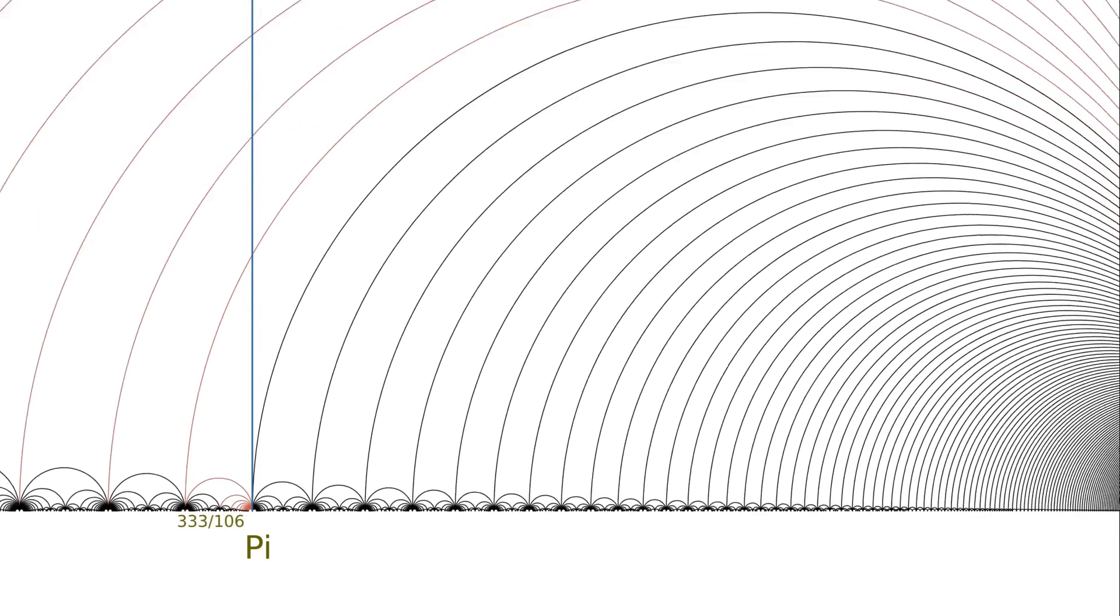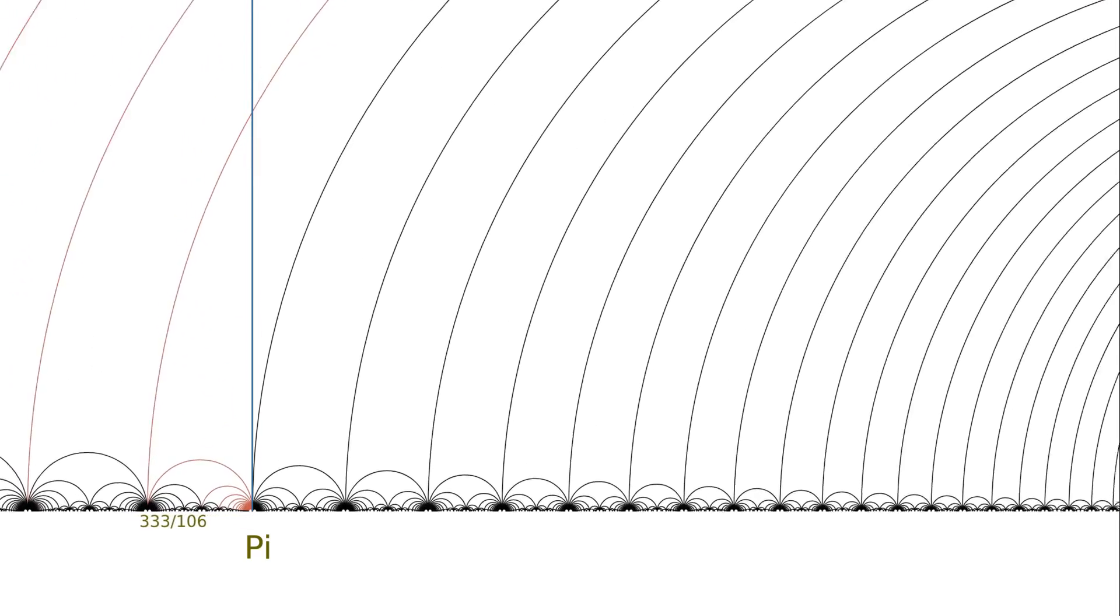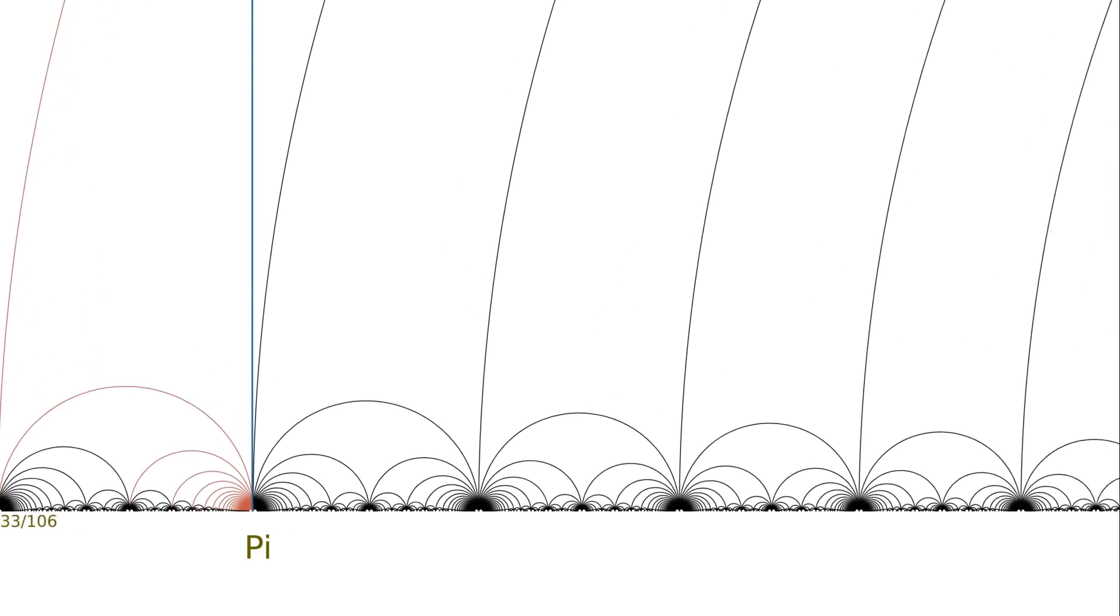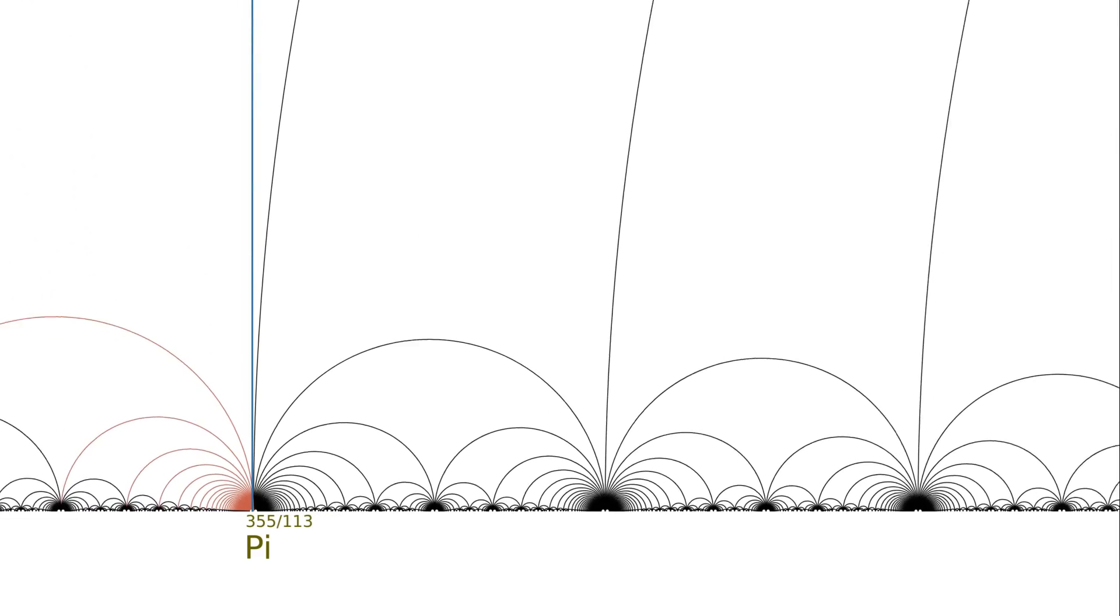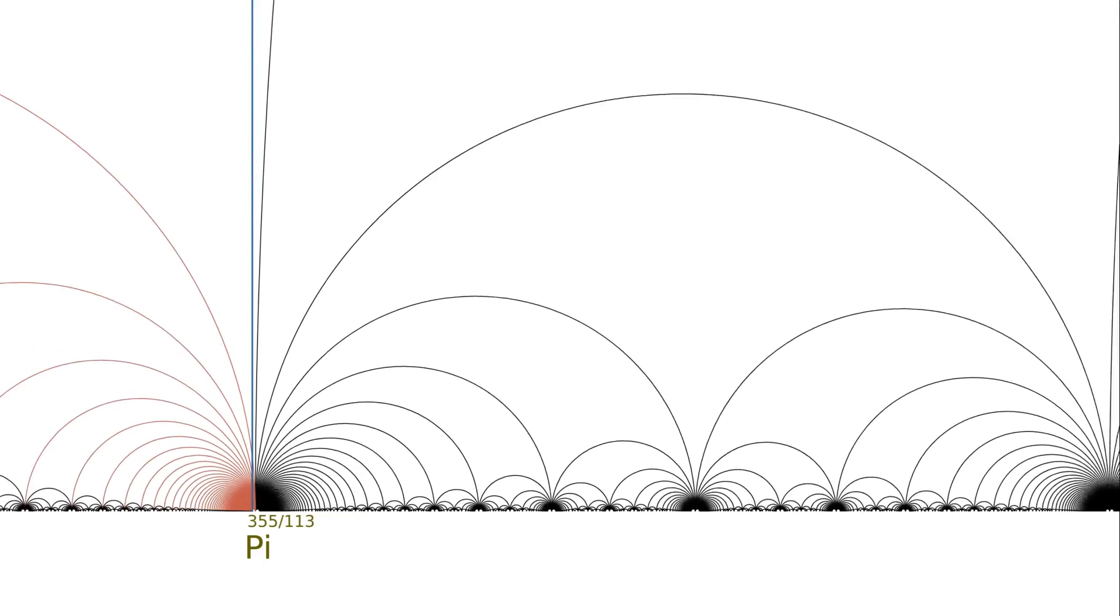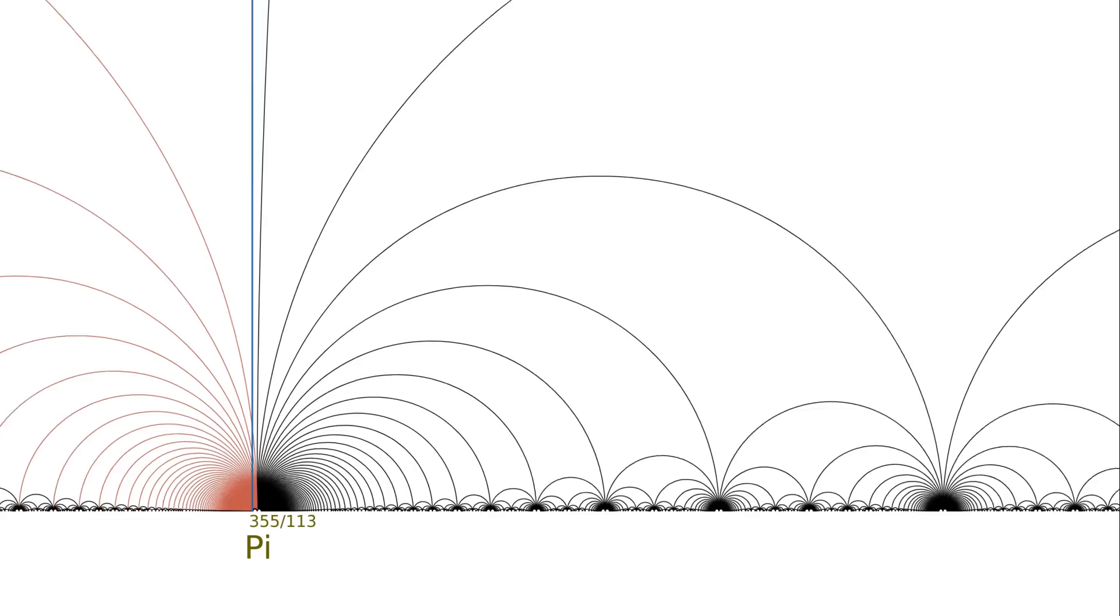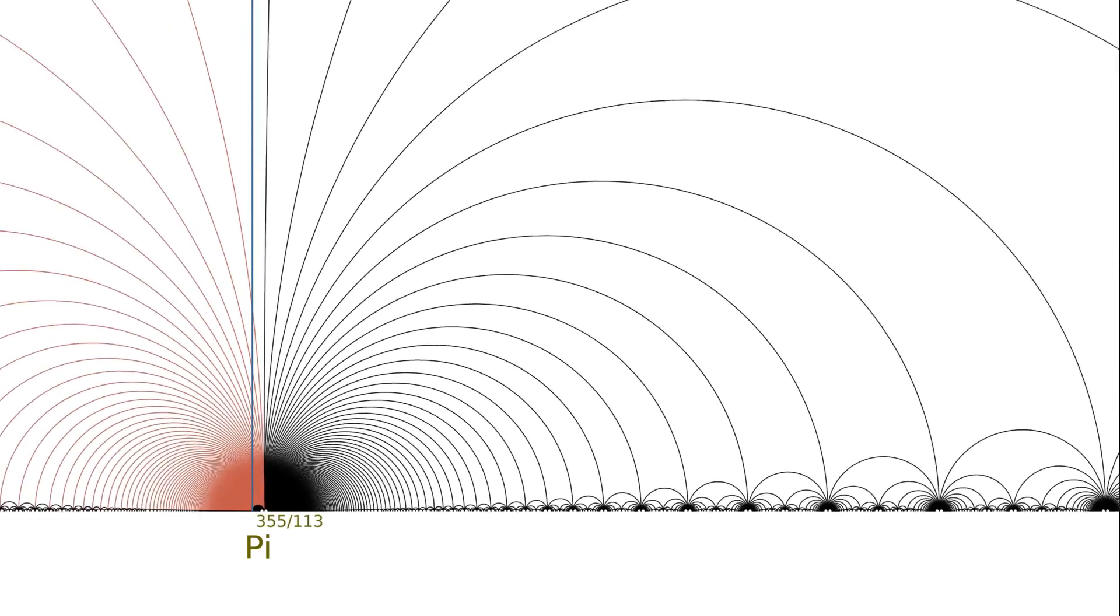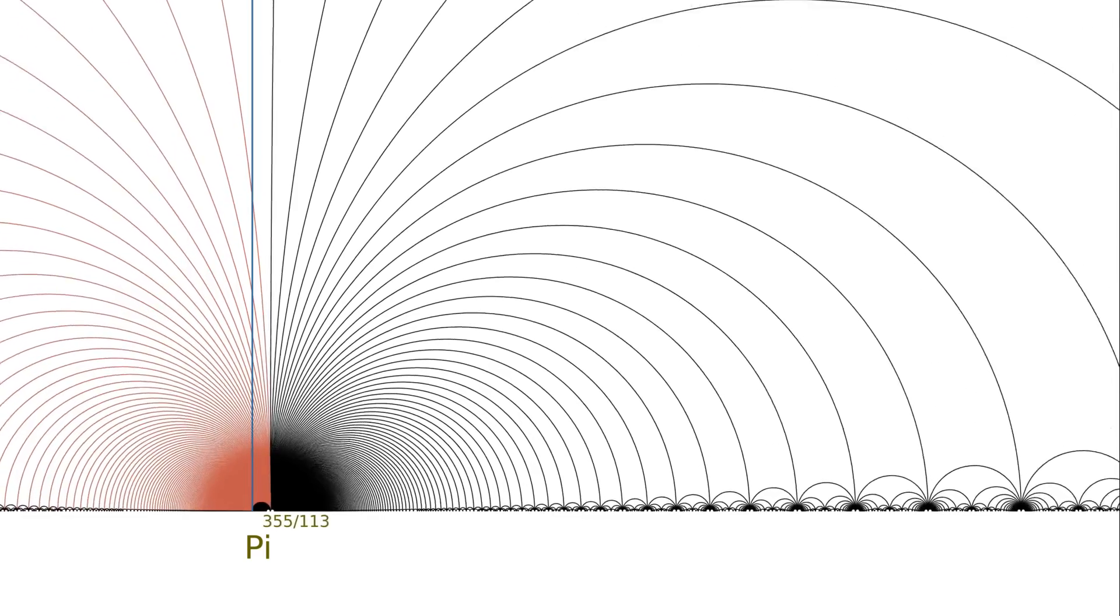But keep watching. You'll see an incredible clump coming up soon. There it is, at 355 over 113. There are 293 lines in this clump. And so 355 over 113 is an incredible approximation to pi, as we saw before.